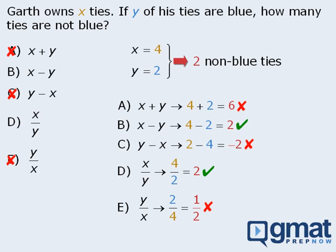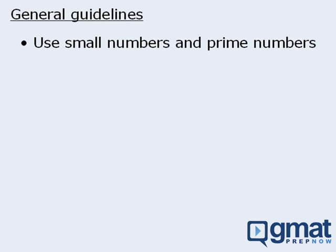Our goal should be to choose numbers that will most likely yield only one matching output. With this in mind, let's examine some general guidelines. First, it's a good idea to choose small numbers since they're easier to work with, and to choose prime numbers since there are fewer relationships between prime numbers. Second, you should try to use different numbers — if you use numbers that are the same, you won't know the effect that each variable has on the resulting output.